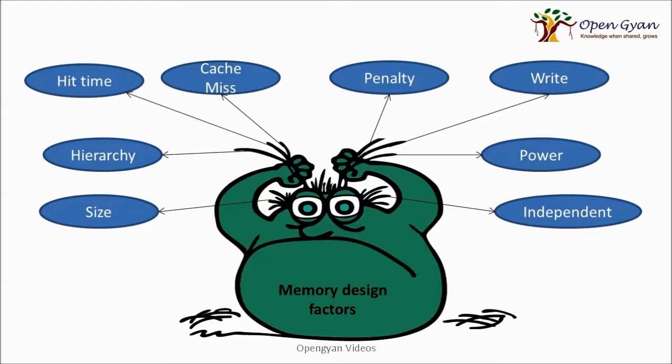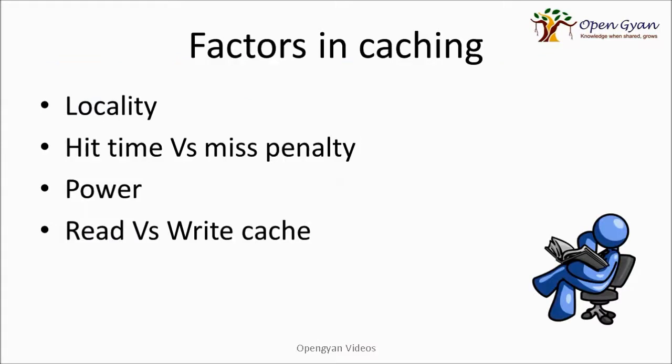There is also the case of writing. If data has to be returned to the cache, is it going to be a write-through cache so the data is immediately written to secondary storage? Or is it going to be a delayed write, where data is written back only when the cache is cleared? Then there is the factor of power — how much power is required to keep data valid and keep discharge low? And finally, independency — keeping the memory independent of the CPU.